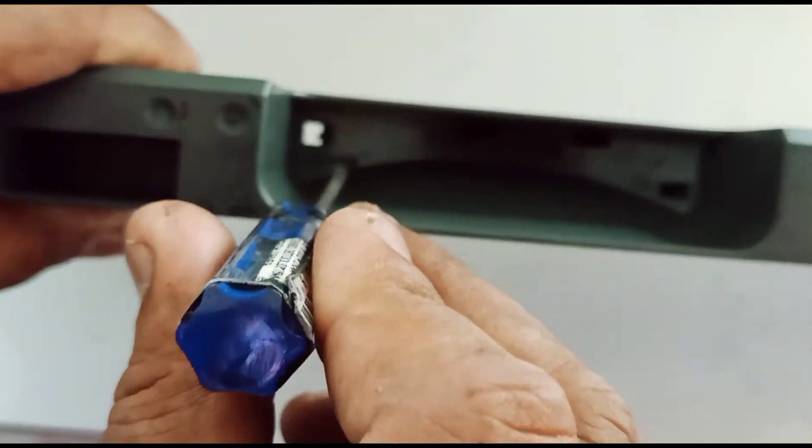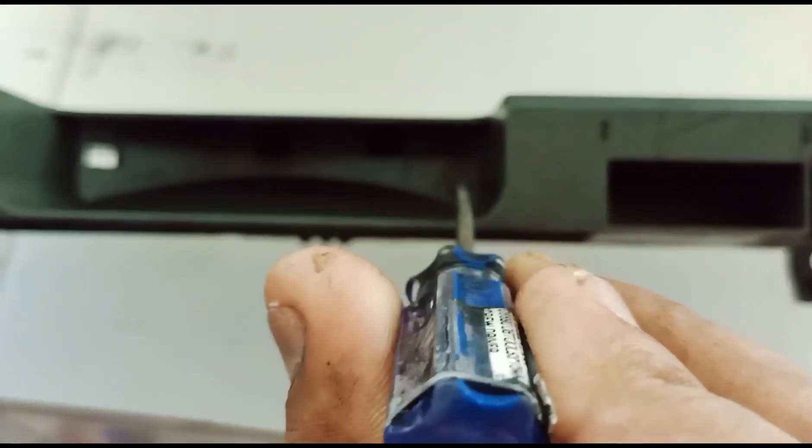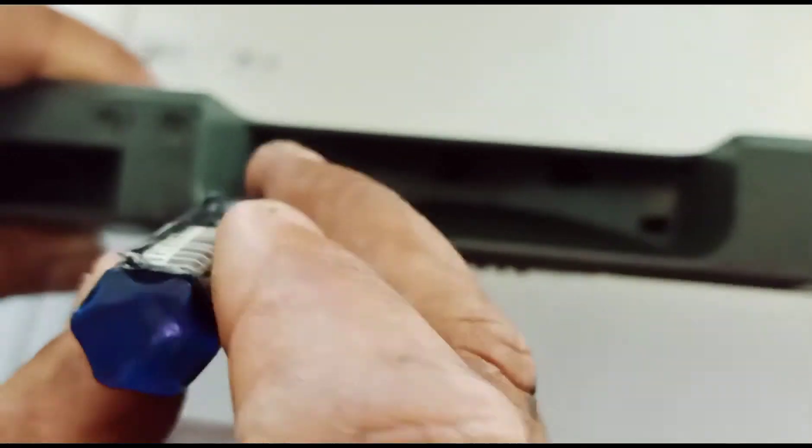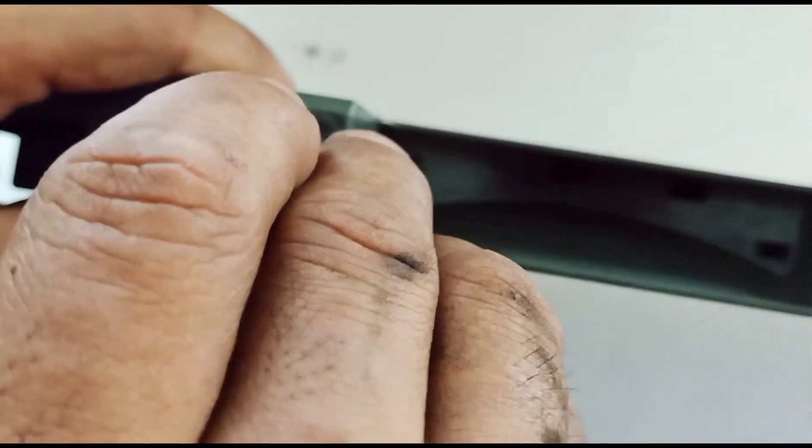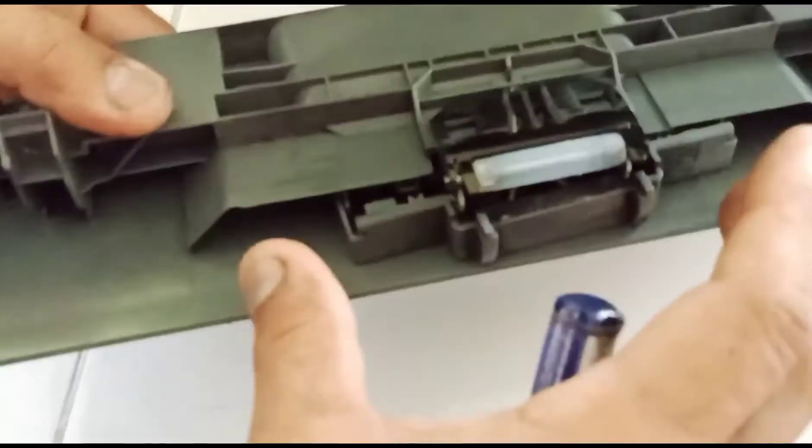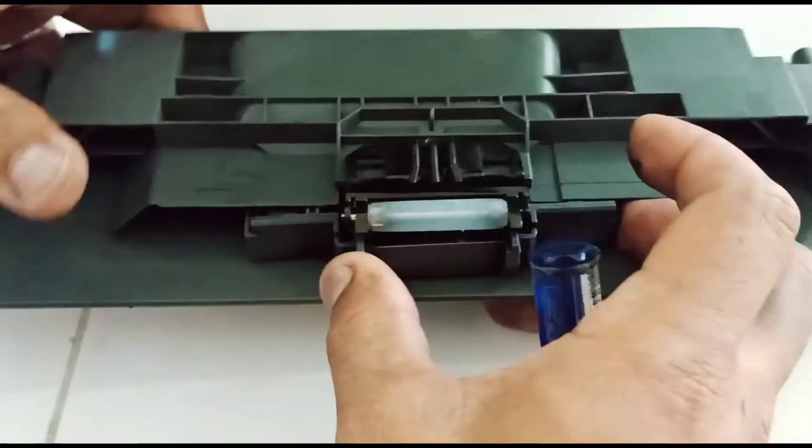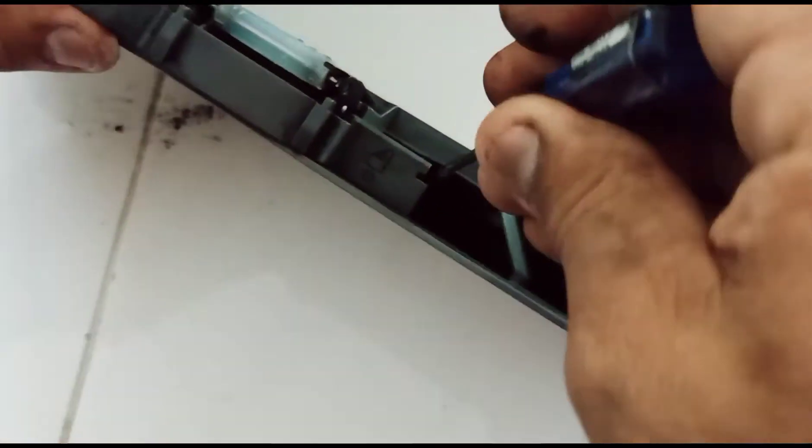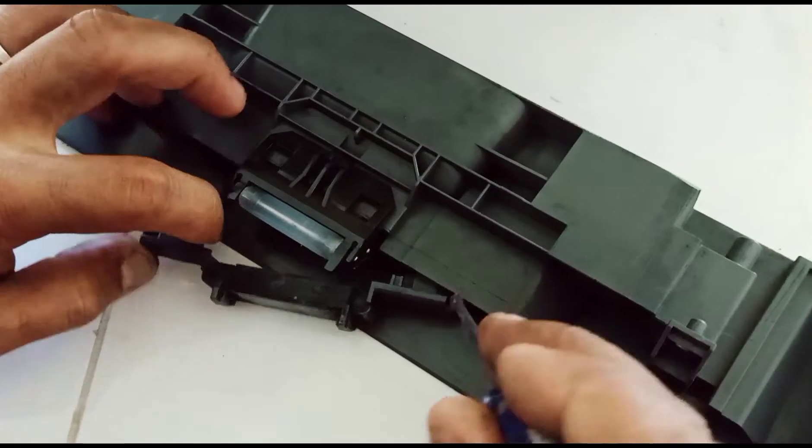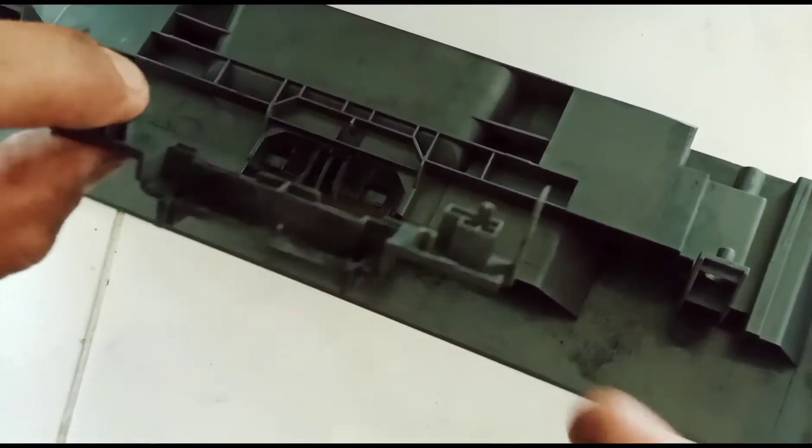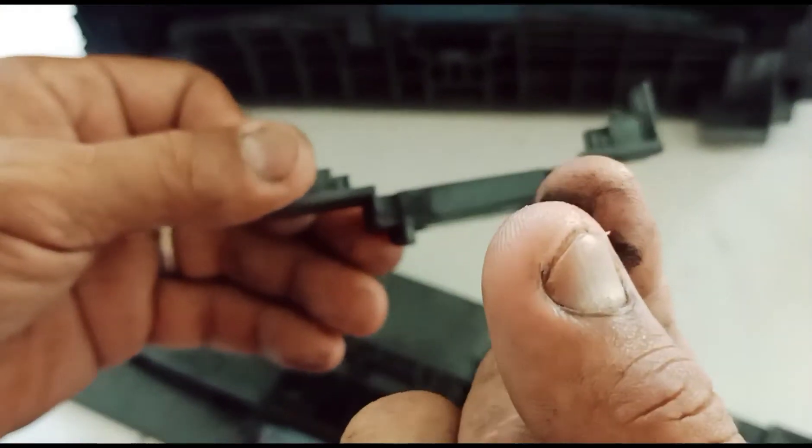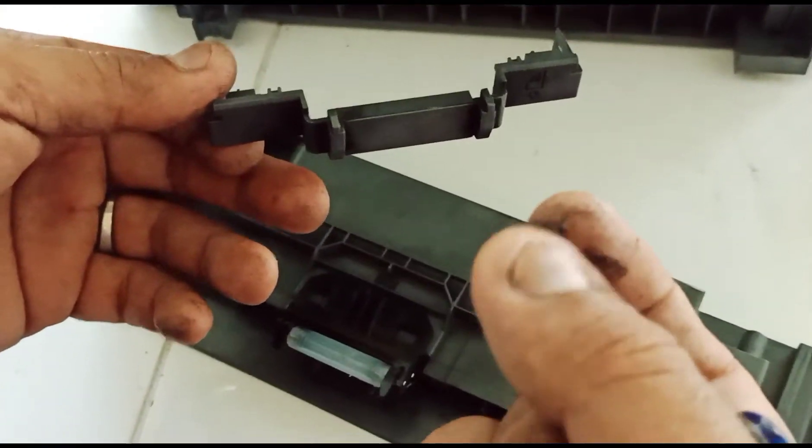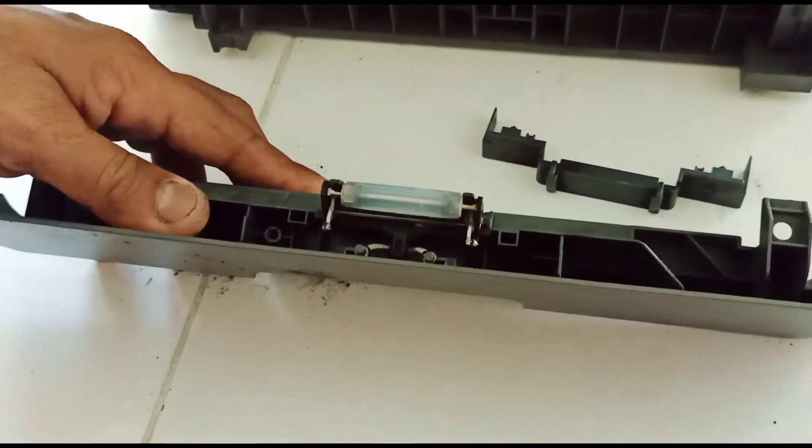Makikita nyo meron butas dito sa kabila. Dito itutulak lang natin yan. Pag natanggal na natin, saka natin itulak yung kabila. Natanggal na sya. Tingnan nyo kung gaano karaming hibla ng coupon band ang nandito sa ating tsaka ink.